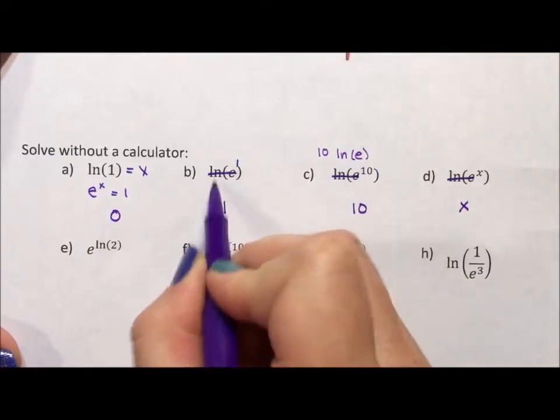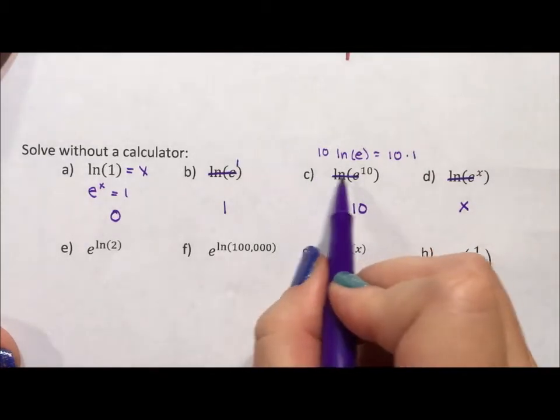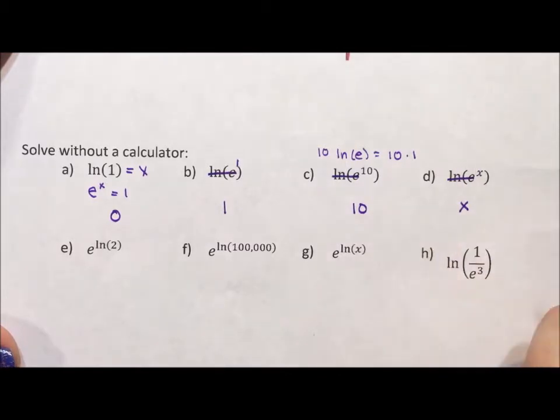And because this is equal to 1, this is equal to 10 times 1, which is also 10. I think thinking of the inverses just undoing each other is a little bit faster, but the power rule works just as well.